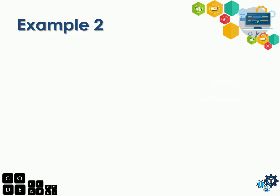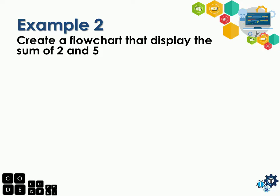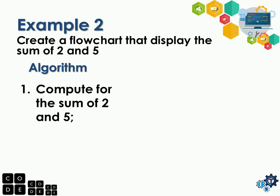Example number 2: create a flowchart that displays the sum of two numbers. We see the word 'display' again — it will just print the sum. But how do we compute the sum? We're going to have a computation — addition. For the algorithm, before we can display the sum, we need to compute first. So: compute the sum of 2 and 5.